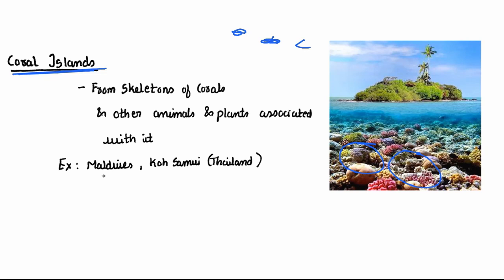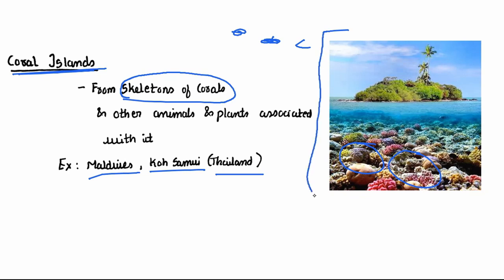Maldives is a Coral Island. Koh Samui in Thailand is a Coral Island. Coral Islands are formed from skeletons of corals and other animals and plants associated with them. They grow until they break away from the water and come out of the water surface.